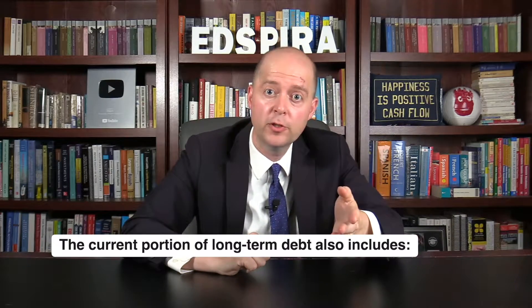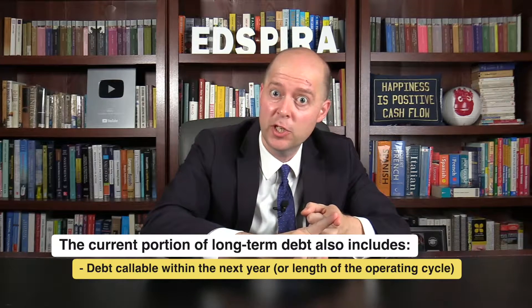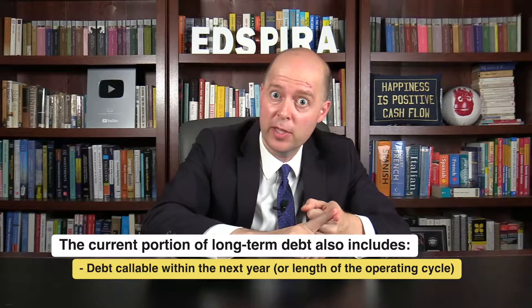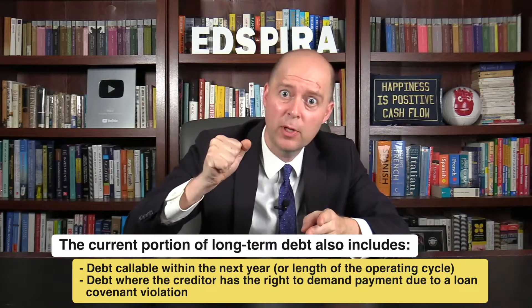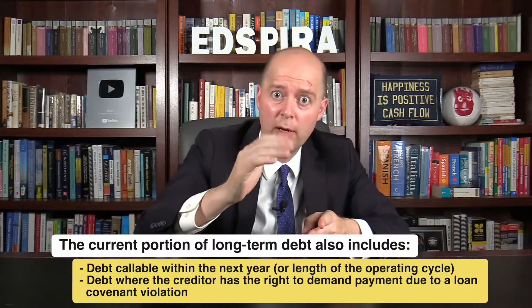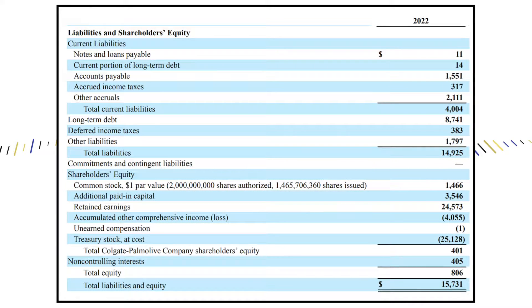The current portion of long-term debt also includes debt callable within the next year, or the length of the operating cycle, whichever is longer, and debt where the creditor has the right to demand payment due to a loan covenant violation. If we take a look at Colgate-Palmolive's balance sheet, you can see that the company reported $14 million of its long-term obligations as a current liability in 2022.